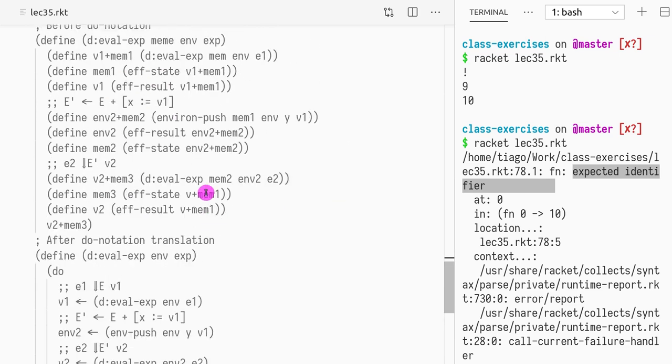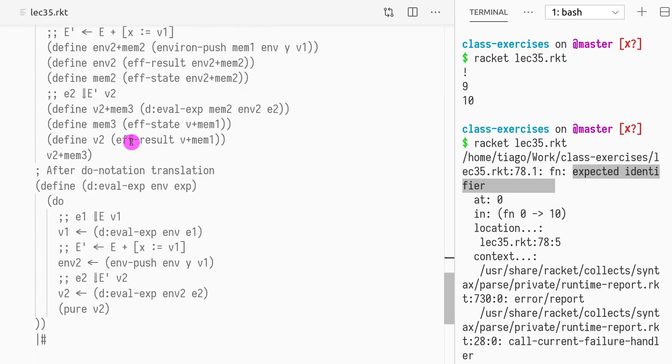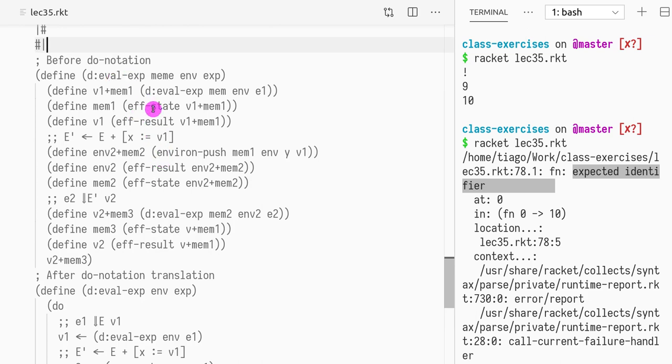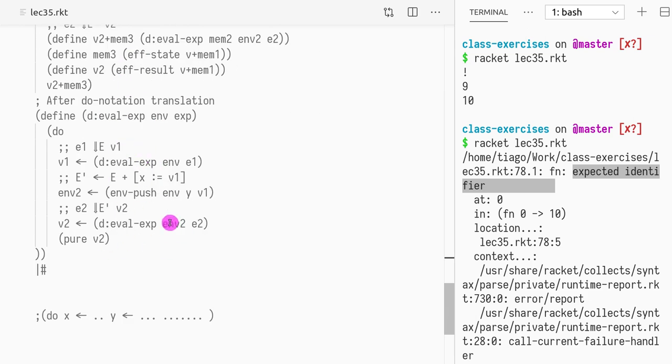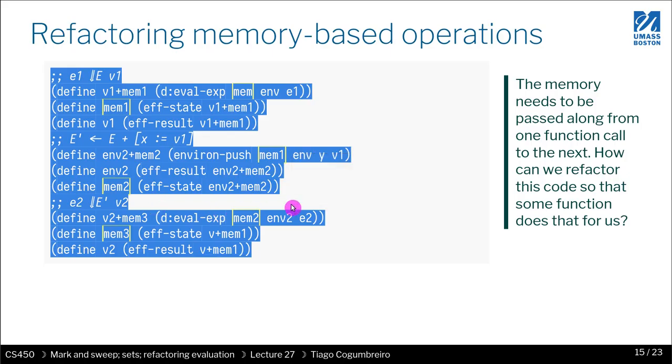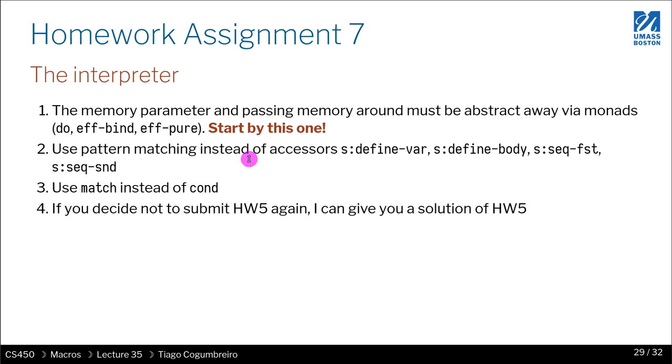And this is what you're going to be asked to do in homework seven is really just translate this code into this simplified form. And as you can see, no memory is being passed. All the memory goes away because that's the job of the do notation and the EFF bind.